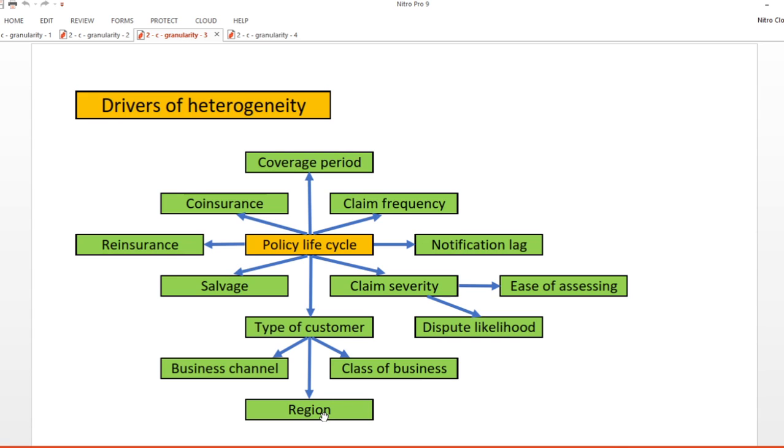Lastly, the region the customer hails from, be it country, state, province, region or more precise location, will be of utmost importance to management and also can bring different types of risk and reaction to insured events, not to mention different legal jurisdictions. So you can't go far wrong by considering these key policy features when deciding on segmentation.